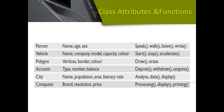Here are some more examples of classes, their attributes, and their functions. A class account can have variables like type of account, account number, and available balance, and it can perform operations like withdraw, deposit, and inquiry. Similarly, a class for computer can have variables like brand, resolution, and price of the computer, and it can have functions like processing, displaying the information, and printing the information.